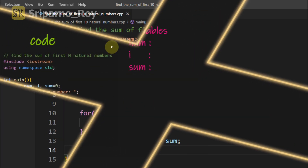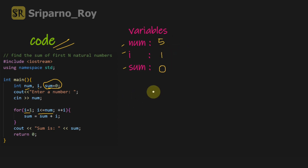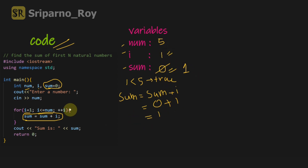Now let's explain the code. On the left I have written the code, so we created 3 variables: num, i, and sum. Suppose the user enters 5. We set i equals to 1 and sum equals to 0. The condition i less than or equals to num is checked — here i equals 1, which is smaller than num equals 5, so the condition is true. Therefore sum equals to sum plus i executes, making the new sum 0 plus 1 equals 1.